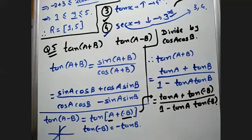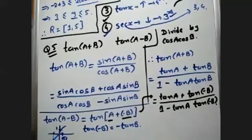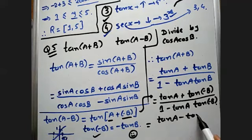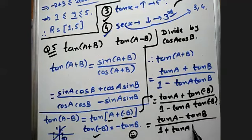We can verify this from the graph: at π/4 the answer is 1, and at -π/4 the answer is -1. So tan(-B) = -tan B. Putting this into the formula, tan(A+(-B)) becomes (tan A - tan B) / (1 - tan A·(-tan B)), which simplifies to tan(A-B) = (tan A - tan B) / (1 + tan A tan B).